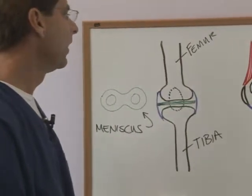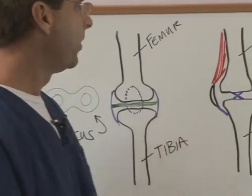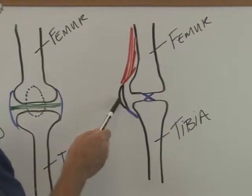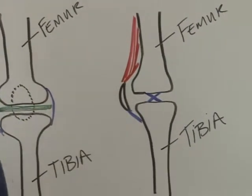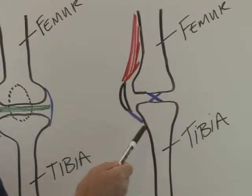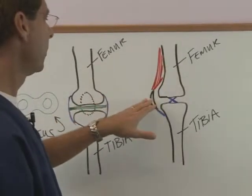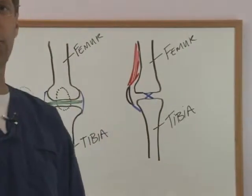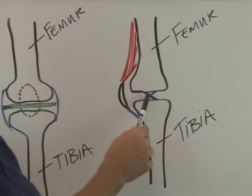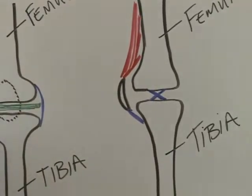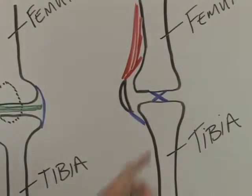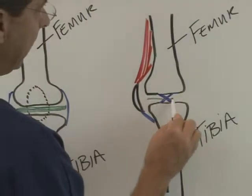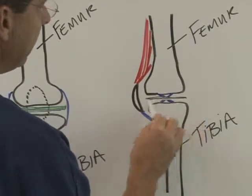When we look at the knee from the side, what we see is the patella again, or the kneecap, sitting out in front of the femur and the tibia. It's connected to the musculature in the front of the leg, and it is connected to the tibia via the patellar tendon. And inside the knee, what we have is the cruciate ligaments, and they are called the cruciates because they are in the shape of a cross. And then of course, in between the femur and the tibia again, we have our meniscus sitting in there.